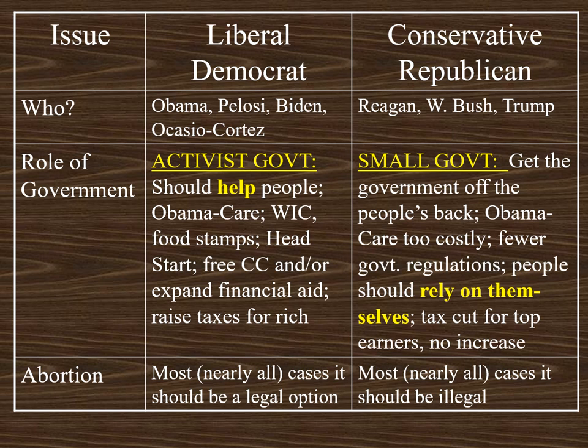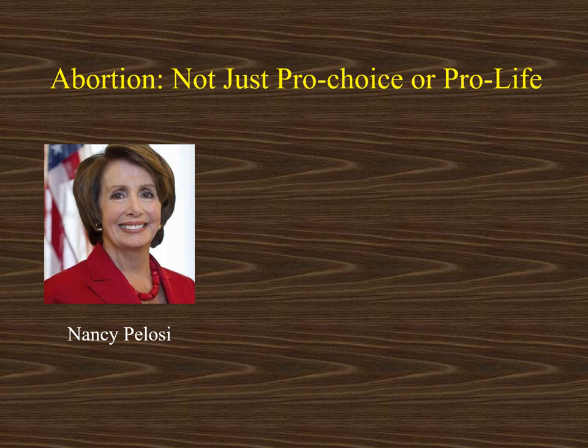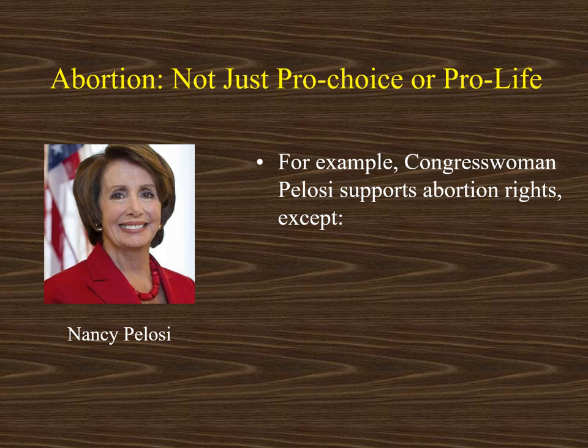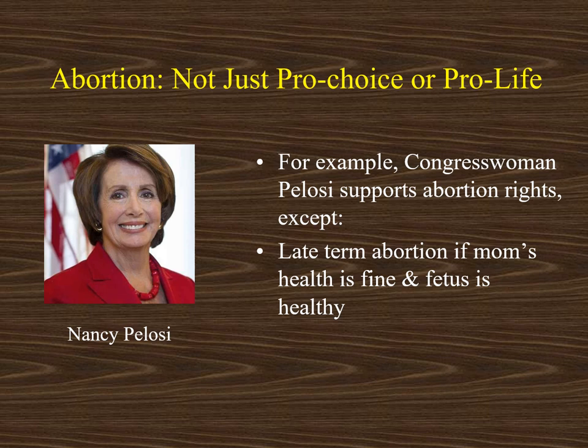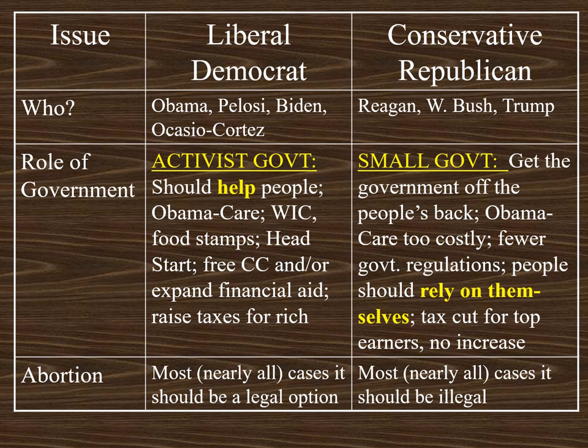A liberal Democrat would take a different approach and argue that in most — just about all — cases, abortion should be a legal option. We need to move beyond a simple description of pro-choice versus pro-life. Nancy Pelosi's position gives a good example — she has a strong record of support for abortion rights, but they would not be absolute. Nancy Pelosi would not support a late-term abortion, such as in the eighth month, simply because a woman changed her mind and was otherwise fine. It's not legal anywhere in the United States under those set of circumstances. It is important to move beyond a simple pro-choice versus pro-life description of abortion.